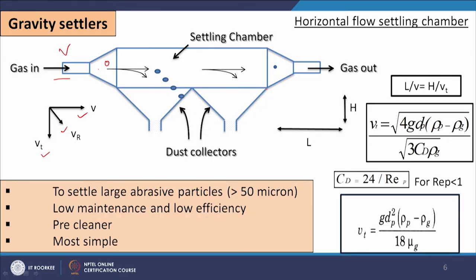If we consider the length L and height H, then L/v (where v is the horizontal velocity) is the time required to travel from inlet to outlet, and H/vt (where vt is the terminal settling velocity) is the time required for the particle to travel from top to bottom of the chamber. These time requirements should be equal — this is the critical condition for separation: L/v = H/vt. The terminal settling velocity vt depends upon the particle size, viscosity of the fluid, density of the particle, and gravitational acceleration g.